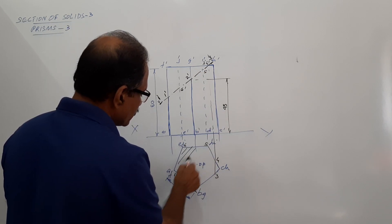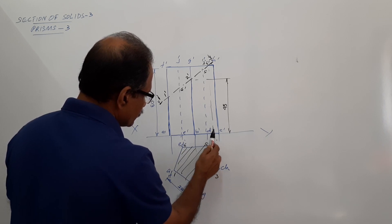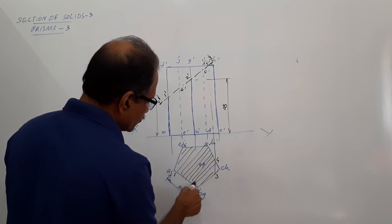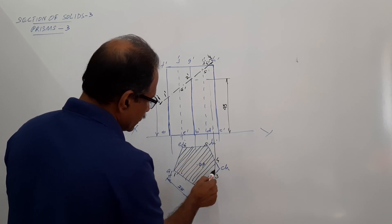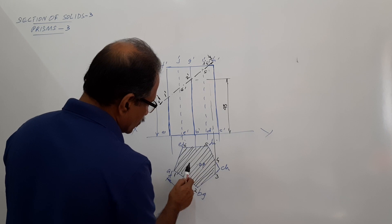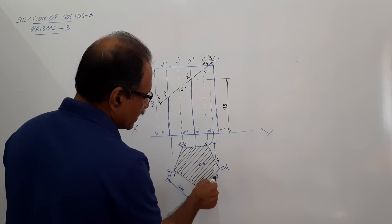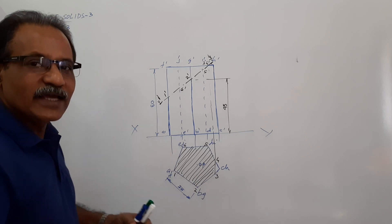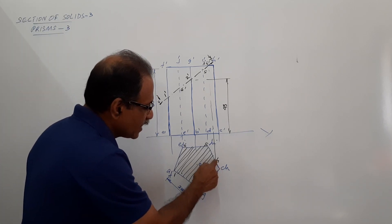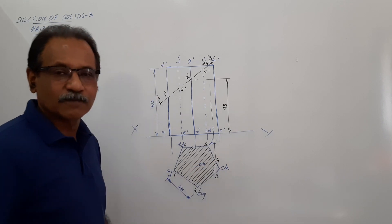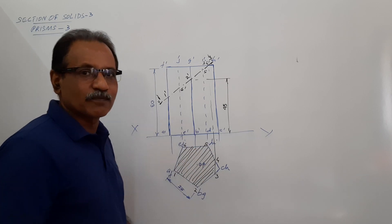Hatch this portion — this small portion. 3, 4, C. That triangle is not hatched. Why? It is not cut — that portion is not cut. So 3, C and H4 is not cut, it is not hatched. That completes the sectional elevation and this completes the sectional plan.